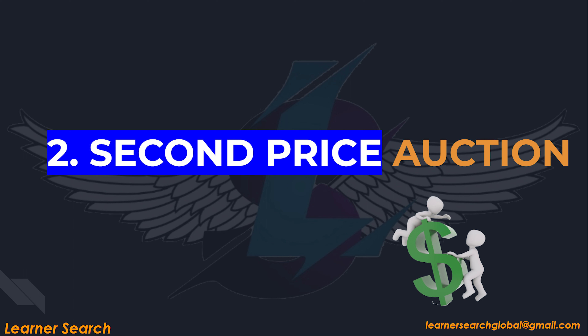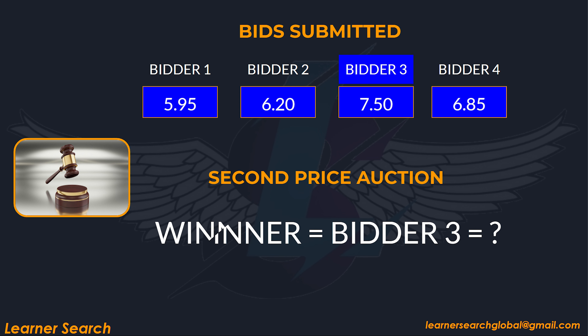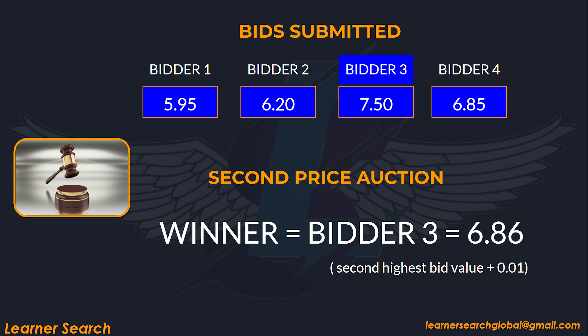Let's move into the second auction model: the second price auction. Here, the highest bidder still wins, but the payment dynamics change. In this model, the winner doesn't pay their actual bid amount. Instead, they pay the value of the second highest bid plus $0.01.